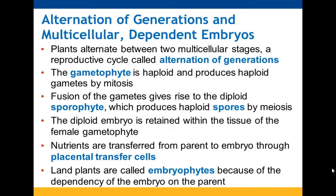First we'll look at alternation of generations — how plants go between two multicellular stages. The gametophyte is haploid and can produce haploid gametes by mitosis. Fusion of the gametes gives you the diploid sporophyte, and then the diploid sporophyte can produce haploid spores by meiosis — that's where we get the genetic variation.